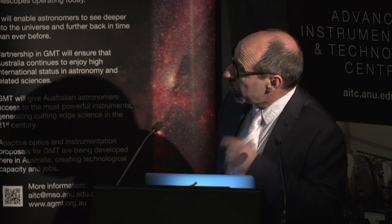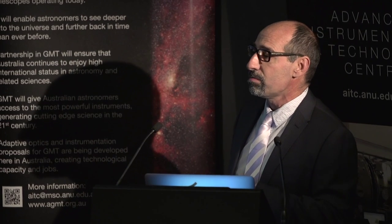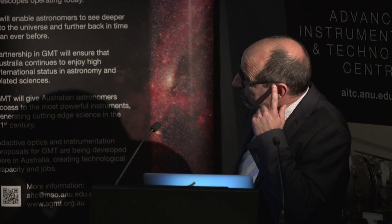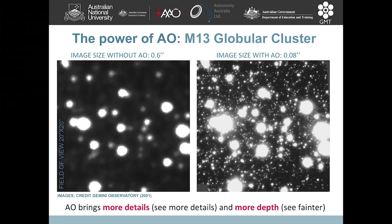Adaptive optics has been installed in most — or even all — 8-meter telescopes in the world, except a couple. Here is a real result from the Gemini 8-meter telescope. This is what you get looking at a globular cluster without adaptive optics, and if you use adaptive optics, that's what you get.